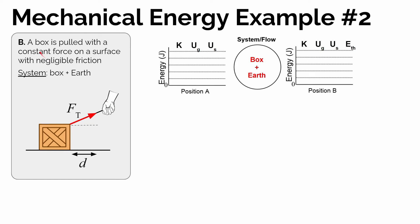Example problem number two: a box is pulled with a constant force on a surface with negligible friction. We're going to define the system as the box and the earth. Let's make an energy bar graph and think about what's happening to the sum of the kinetic and potential energies. The box is moving a little in the beginning, so there's some energy stored in the kinetic energy account. With negligible friction and a tension force applied at an angle, the box is going to accelerate in the positive x direction, so it will have more energy stored in the kinetic energy account.